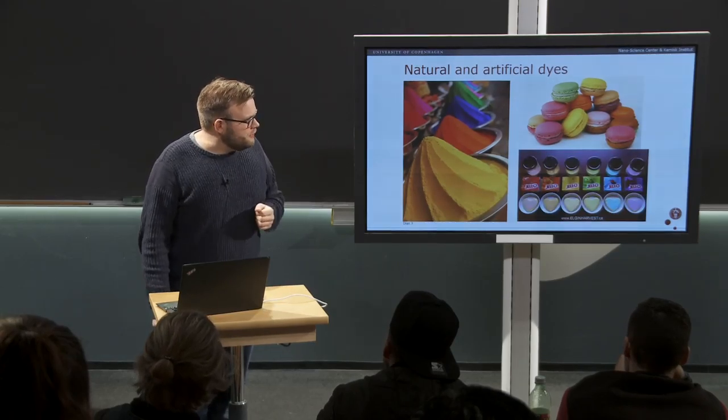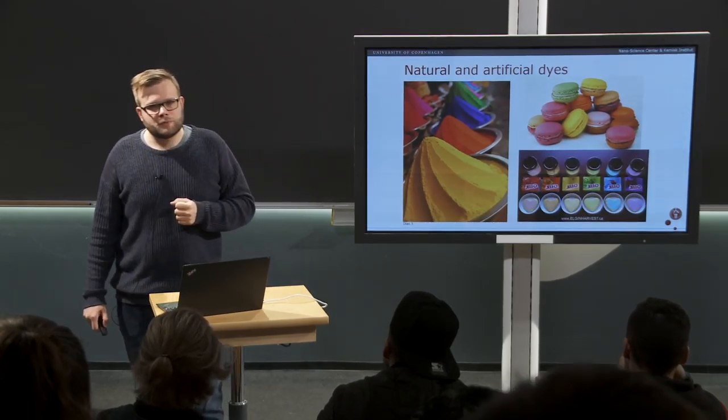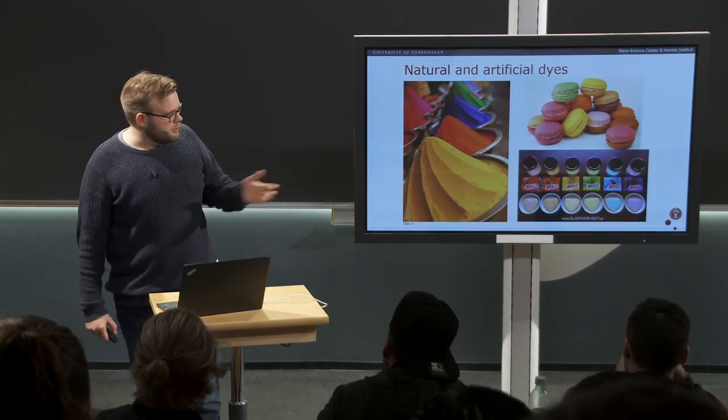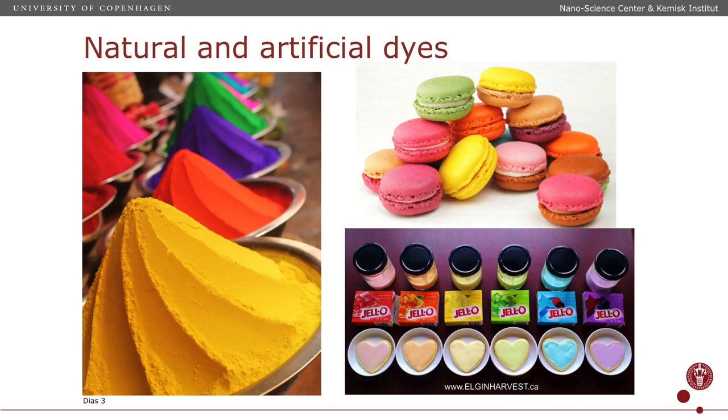The natural dyes are either extracted from nature or made exactly as they appear in nature in the laboratory. There's no difference whether it's extracted from a beetroot or it's made in the lab. But we also have artificial dye colors — food colors — and particularly the blue is difficult to find in nature, so we make that in the lab.